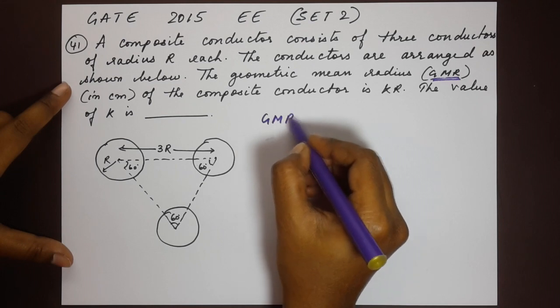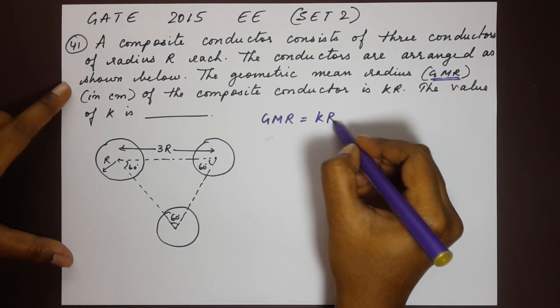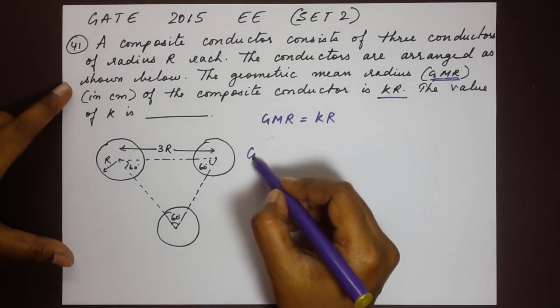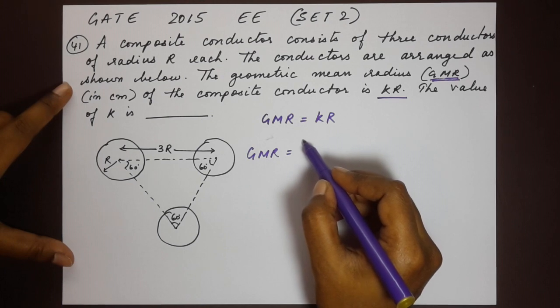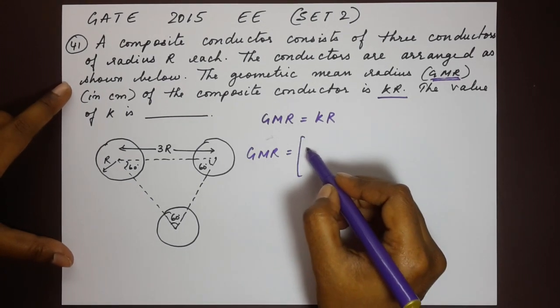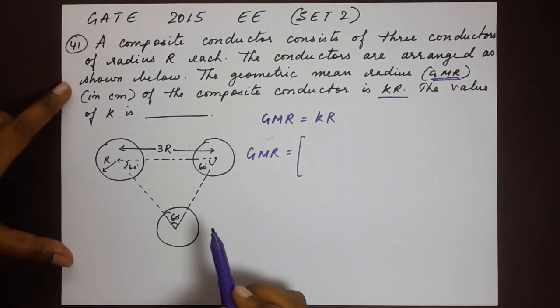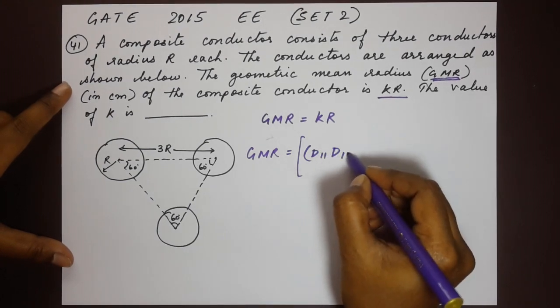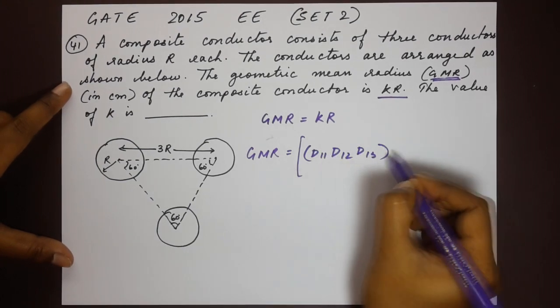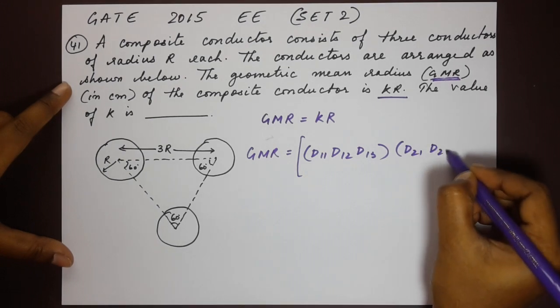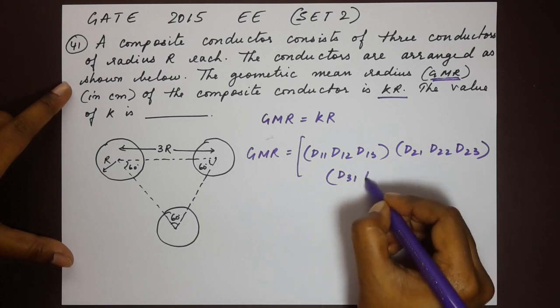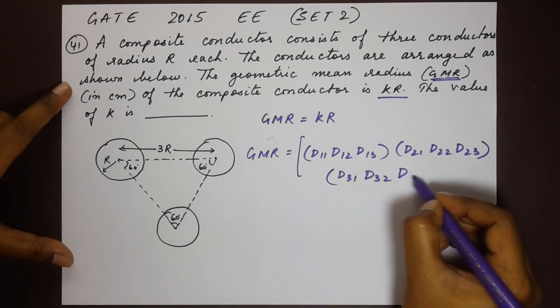Now GMR is given as kr according to the question. The formula for GMR for a composite conductor is - now since we have three conductors here, I am going to write down the formula for the three conductors alone. We have d11, d12, d13 into d21, d22, d23 into d31, d32, d33.